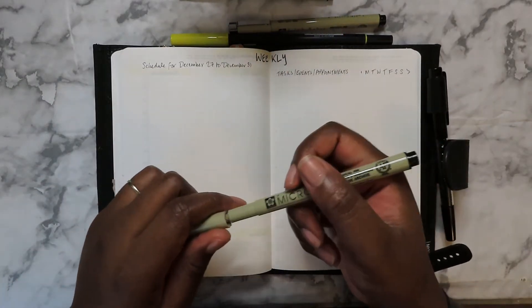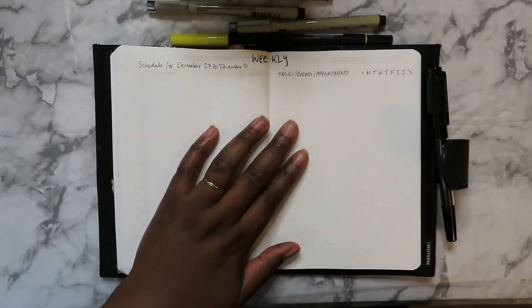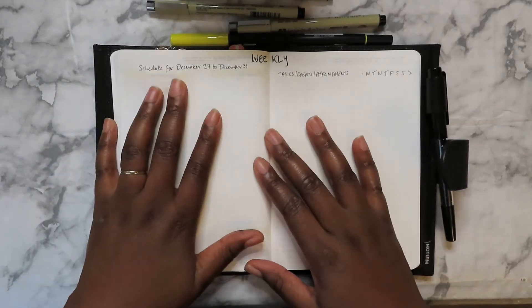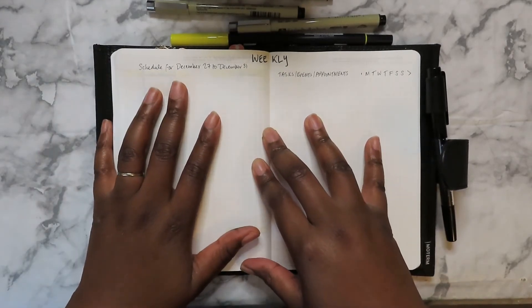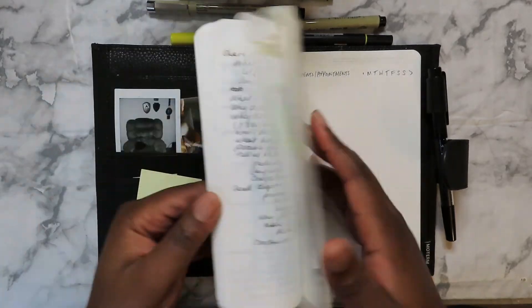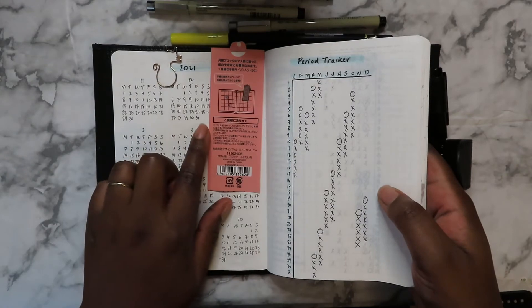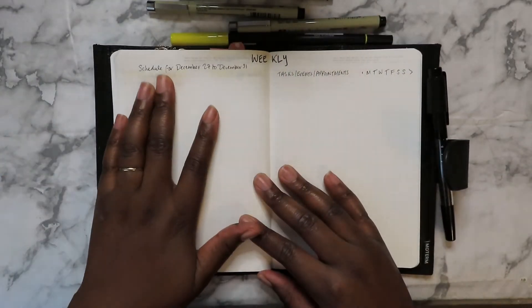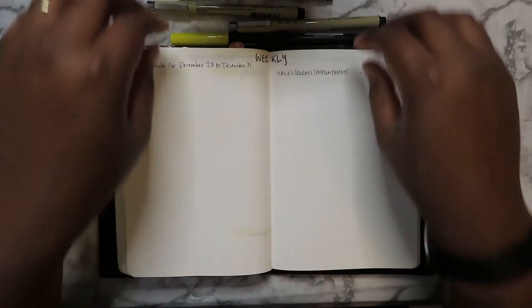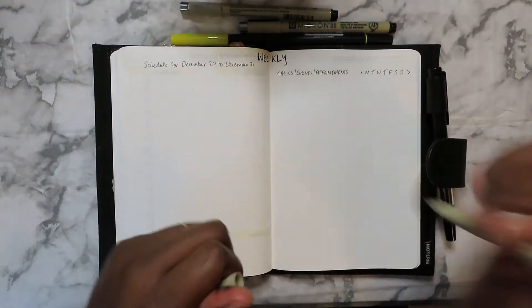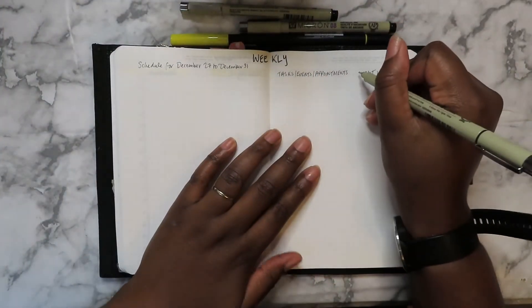I like to keep my months together, and my Jibun Techo Days starts January 1st, so of course it's only going to go up to the 31st, which is part of the week. The 31st is a Friday, so it's going to be from Monday to Friday. I'm going to use the 05 to create the lines.